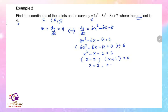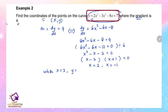Factorizing: (x - 2)(x + 1) = 0. After getting the values of x, we find the value of y to get the coordinates. When x = 2, substitute into the curve: y = 2(2)³ - 3(2)² - 8(2) + 7, which gives y = -5.